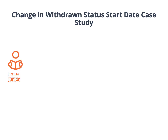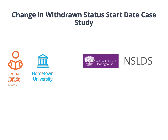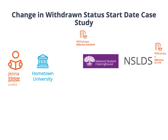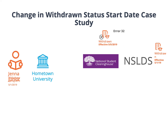Now we will go over a case study on this scenario. Jenna Jr. recently withdrew from Hometown University on May 1, 2019. The withdrawn status was reported to the clearinghouse and subsequently to NSLDS. Hometown University updated the withdrawn status to a status effective date of May 5, 2019. After reporting the new withdrawn date to NSLDS, an Error 32 is returned.